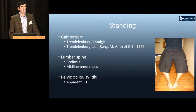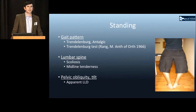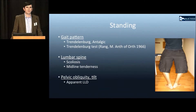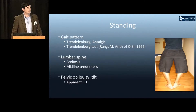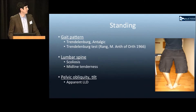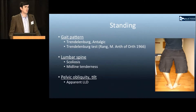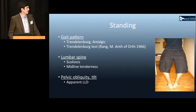In the standing position, we first look at gait, looking for an antalgic gait or Trendelenburg gait, and also perform a Trendelenburg test. The lumbar spine is assessed for scoliosis, any pelvic tilt or obliquity, and apparent leg length discrepancy is also assessed at this time.